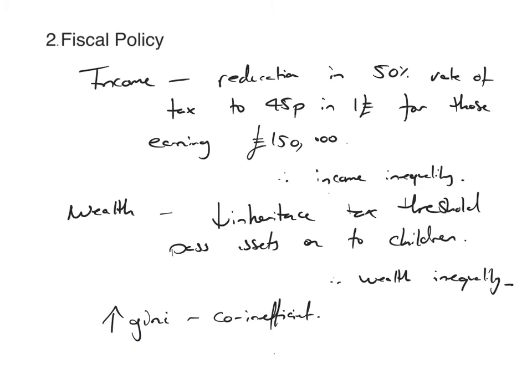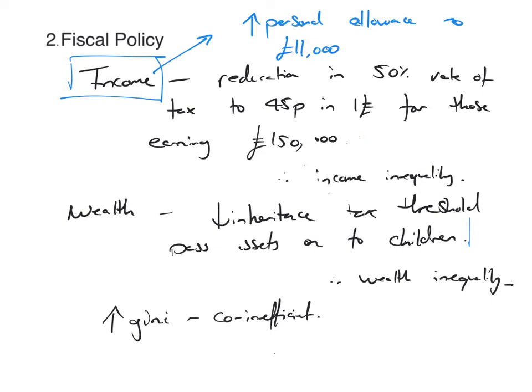Evaluating this point, you're looking for an example of a policy that works on the other side. There have been some policies which have reduced inequality. The obvious one, coming back to income, is the increase in the personal allowance in the UK to around £11,000, which has taken a lot of people out of tax and increased disposable income for the lowest earners. In this point you could also talk about changes to the benefit system. Government policy on tax and spending is absolutely crucial with regards to inequality.